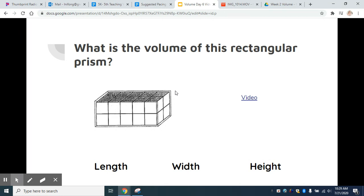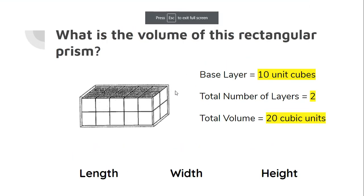We can use all that information and all those different side views to determine the total volume. So we were correct that the base layer was 10, so was the top layer. Two layers of 10 make 20 cubic units.